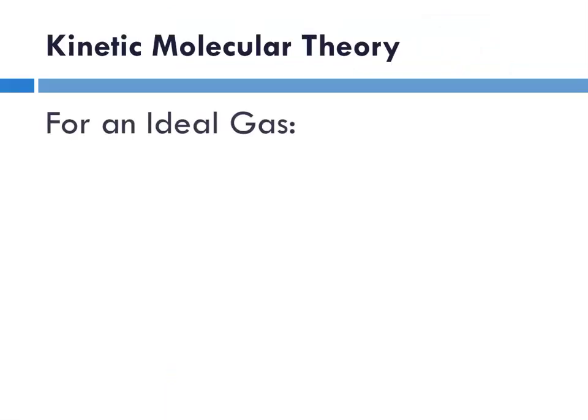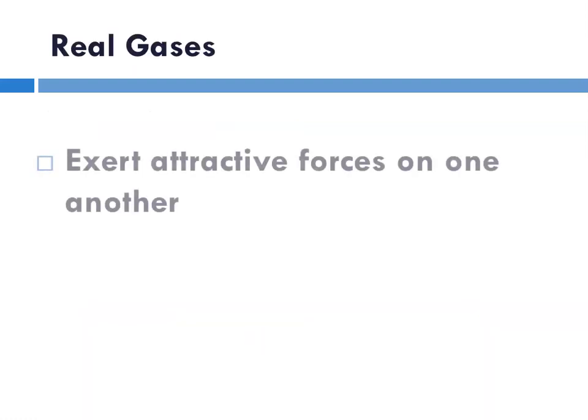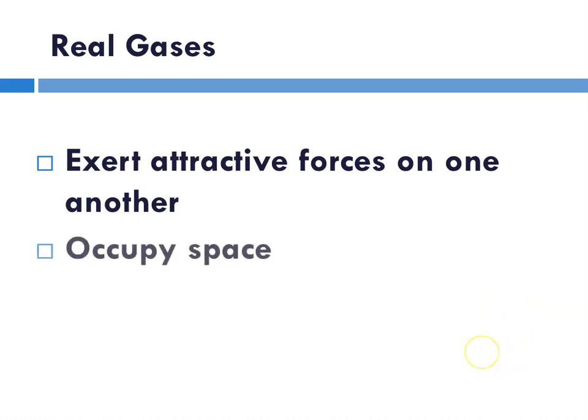Referring briefly to kinetic molecular theory, for an ideal gas, the motion of the particles is random and linear, and the collisions are elastic. By elastic collision, I mean that no energy is lost when the particles are colliding, whether with other particles or whatever container that they encounter. Real gases actually do exhibit attractive forces on one another and repulsive, depending, and they do occupy space, and obviously their collisions are not elastic.